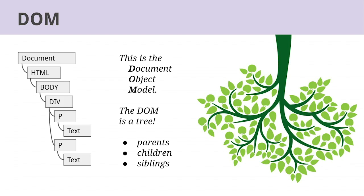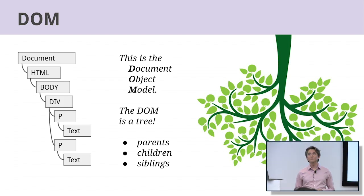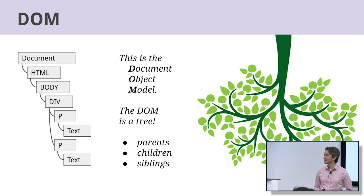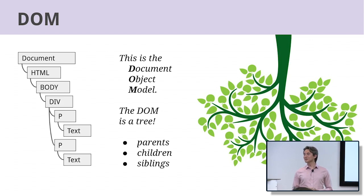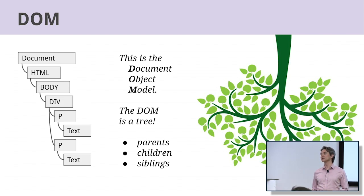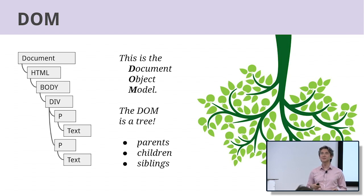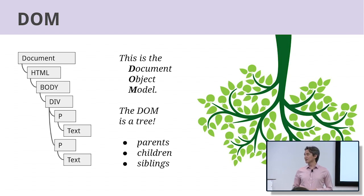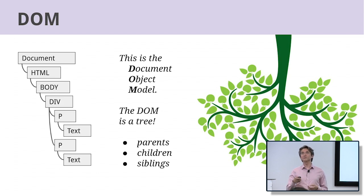The DOM is a tree of the sort found in computer science, where trees are upside down. This is the first of many trees we'll encounter in the engine. The reason they're all trees is that they're all based on the DOM, which is based on the structure of HTML. When we talk about nodes, we usually mean the nodes of the DOM tree.